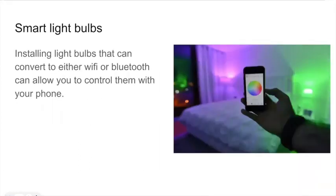A newer aspect of the digital ecosystem is smart light bulbs. By installing these bulbs, you can connect them via Wi-Fi or Bluetooth and control them from your phone. For example, the image shown here shows a person choosing the color of the lights in their bedroom, all controlled from their smartphone.